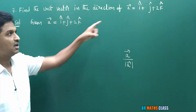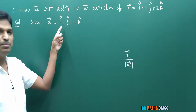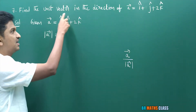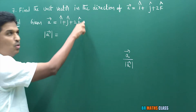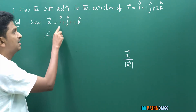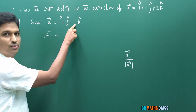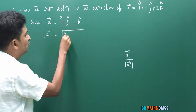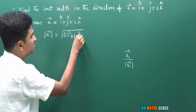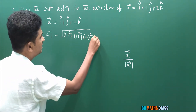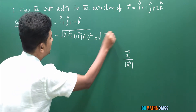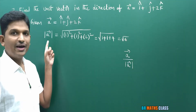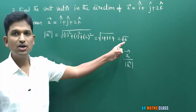They given a⃗ as i cap plus j cap plus 2k cap. To calculate magnitude of this vector, I need its scalar components, which are 1, 1, 2. So magnitude of this vector is square root of 1² plus 1² plus 2², which equals root of 1 plus 1 plus 4, that is root 6.